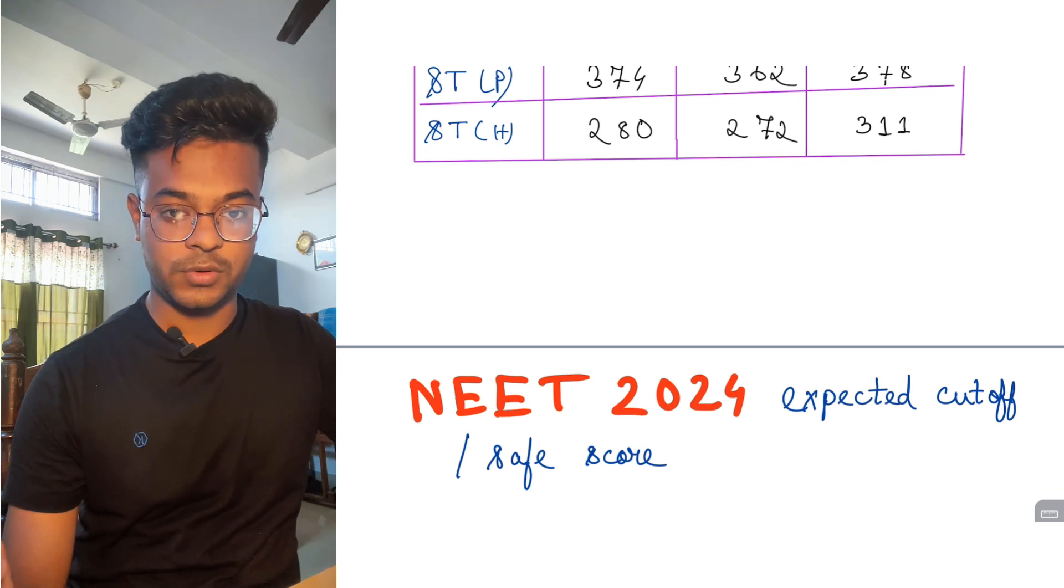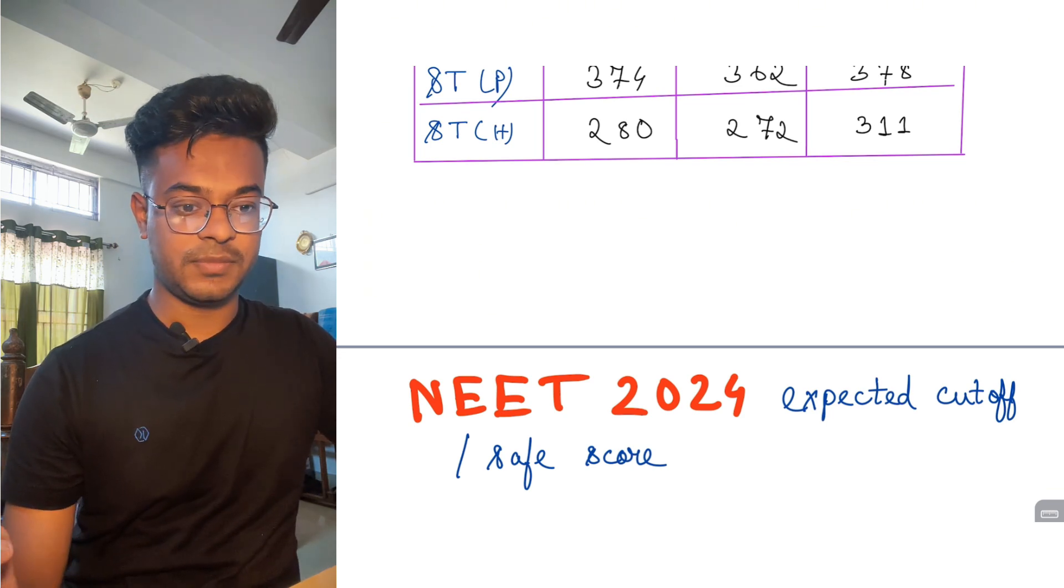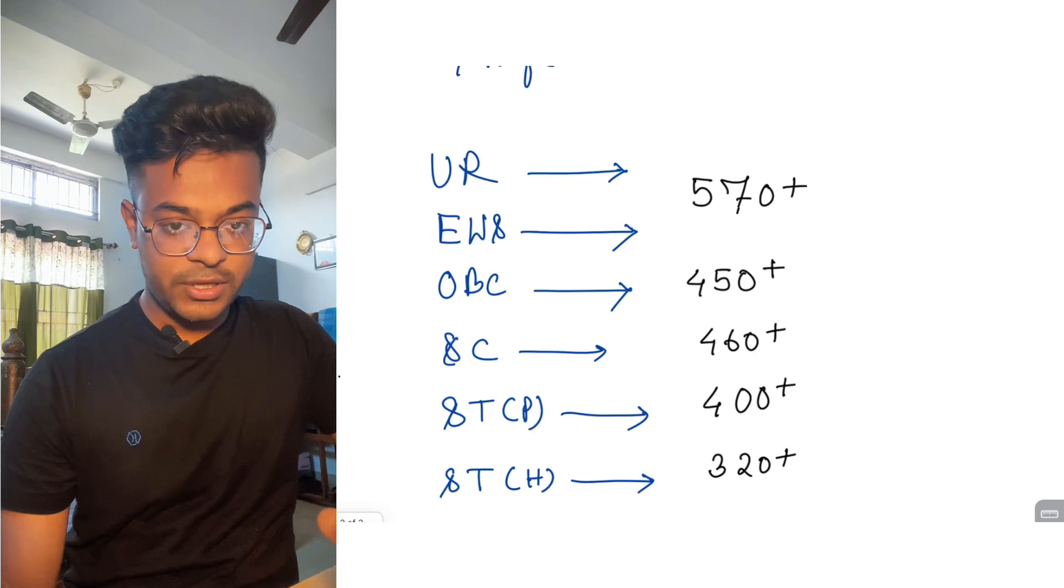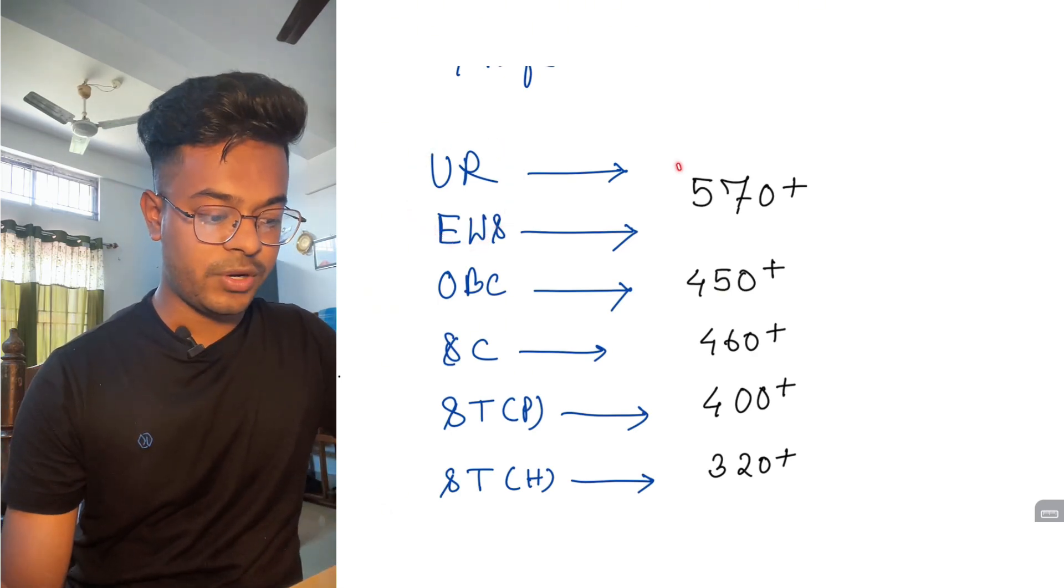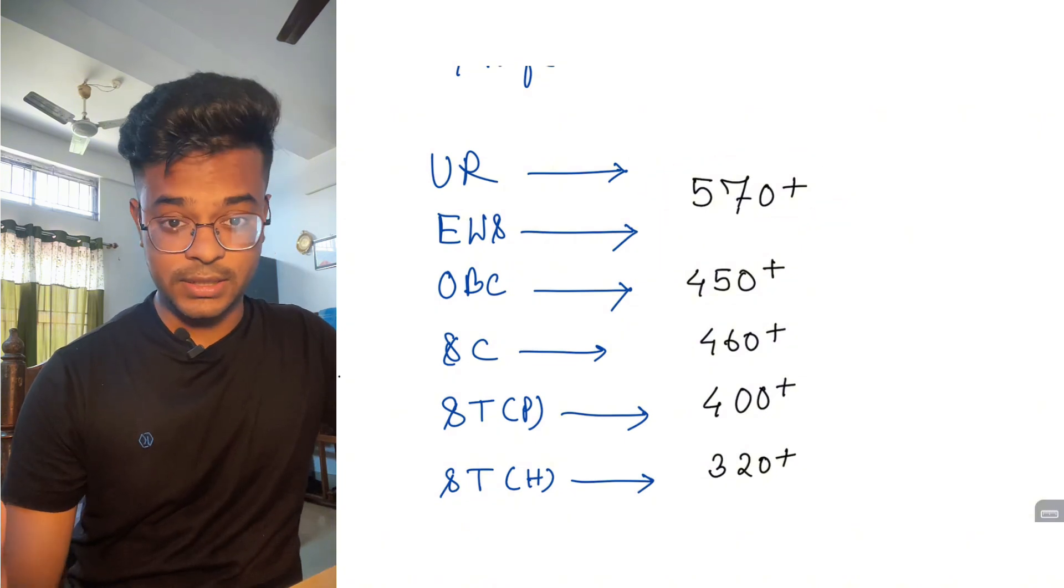So for NEET 2024 expected cutoff and safe score, what score you need to get selected. If you belong to UR or EWS category, then try to score above 570 marks to be in the safe zone.